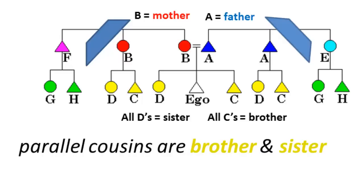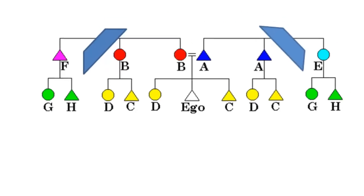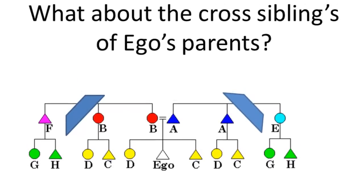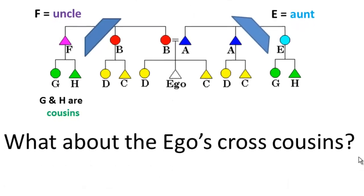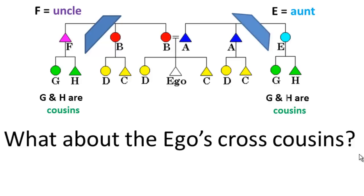This doesn't extend to the cross-siblings of ego's parents — we'll use 'uncle' and 'aunt' to show they're not called by the same term. Similarly, the cross-cousins are not considered to be siblings. The parents' cross-siblings are not called by parental terms, and the cross-cousins are not called by sibling terms. So that's an Iroquois kin terminology.